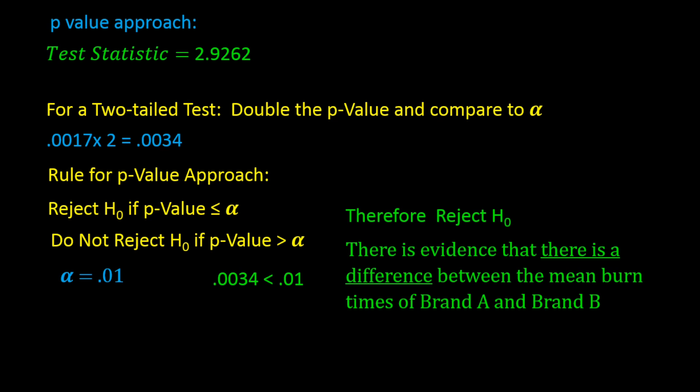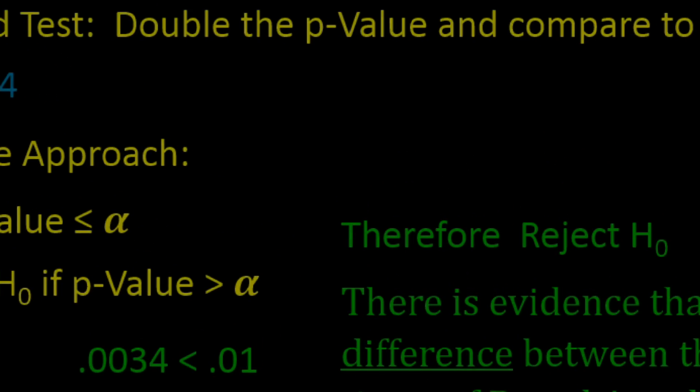That concludes part one of this tutorial on inferences about means from two populations, sigma known. Please make sure to watch part two, where we will continue with inferences about means from two populations when sigma is unknown. I hope you enjoyed this tutorial and learned something.